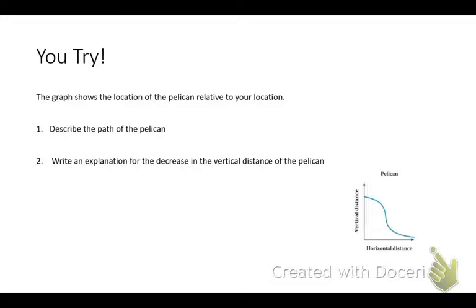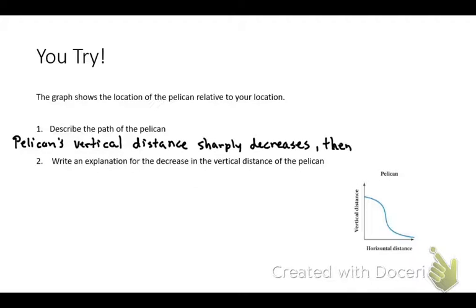Tristan, what did you say? The height that he's flying. Pelicans vertical distance. If you just said height, that's fine. Gradually decreases. So that's what it kind of starts off, gradually decreasing. But then it's actually a pretty sharp decrease, isn't it? So I'm just going to say sharply decreases. Then levels off towards the ground. Something along those lines. Obviously, it doesn't have to be word for word. But, again, the more detailed you are, the better.